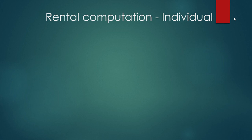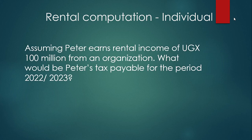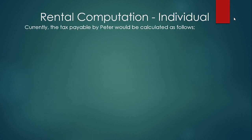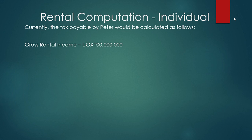We can concretize this by looking at an example — the same example used last year. Assuming Peter, an individual taxpayer, earns rental income of 100 million shillings from an organization. Please note the rates are the same whether you are renting out your property for residential or commercial purposes. So what would be Peter's tax payable for the period 2022-2023? The rates will be computed as follows. Peter's gross rental income is 100 million shillings.